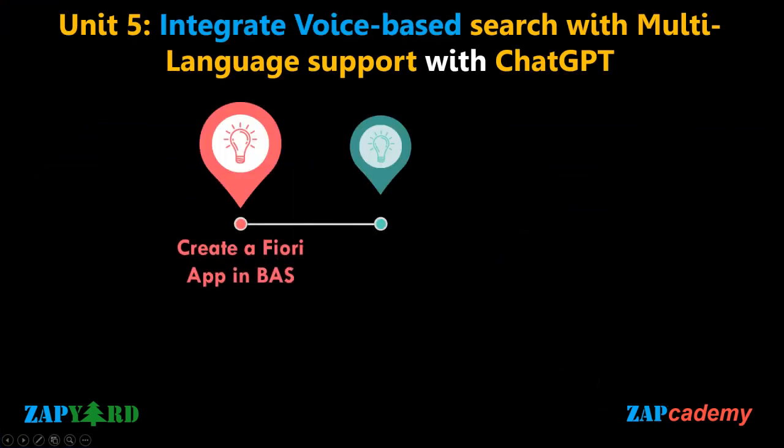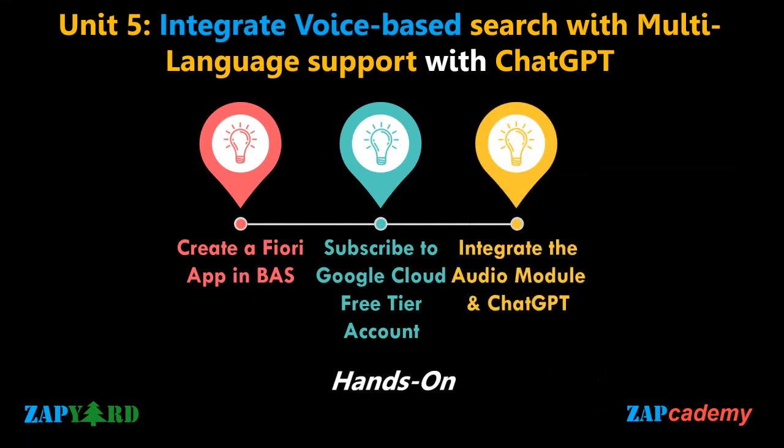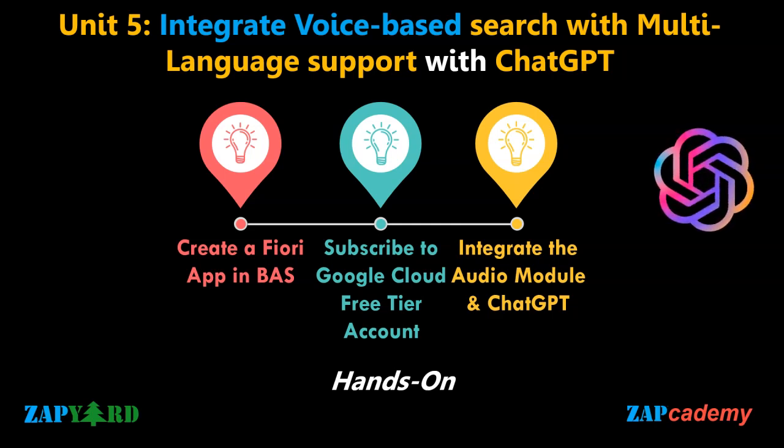Unit 5 will be more exciting and fun. We dive into the exciting world of multilingual voice query processing. Our goal is to develop a Fiori application that captures audio queries in various languages such as English, Hindi, and many more. We will start by creating a Fiori application using the Business Application Studio, or SAP BAS. To enable audio-to-text conversion, we will subscribe to a Google Cloud Free Tier account, giving us access to the Google Cloud Transcriber service which will convert the captured audio into English text. Next, we will integrate the audio module into our SAP Fiori application, enabling users to record and submit their voice queries in their preferred language for a seamless and user-friendly experience.